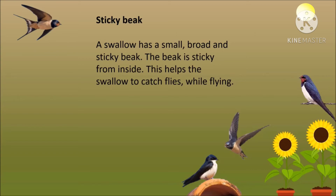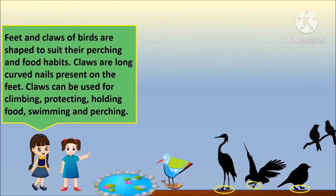A swallow has a small, broad and sticky beak. The beak is sticky from inside, which helps the swallow to catch flies while flying.